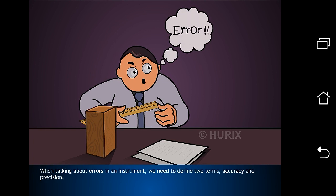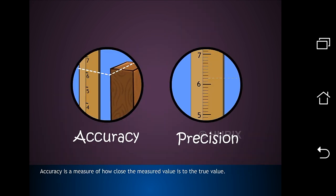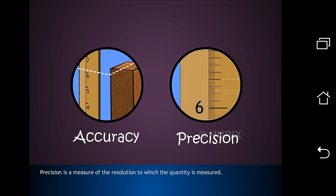When talking about errors in an instrument, we need to define two terms, accuracy and precision. Accuracy is a measure of how close the measured value is to the true value. Precision is a measure of the resolution to which the quantity is measured.